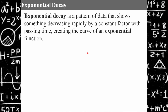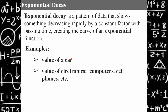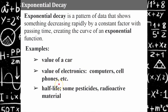Exponential decay is a pattern of data that shows something decreasing rapidly by a constant factor with passing time, creating the curve of an exponential function. Examples include the value of a car — when you drive a car off a lot it starts decreasing in value, and it's not at a constant rate, it's exponential. Values of electronics like computers and cell phones are a perfect example. There's also half-life — a science term about pesticides disintegrating and radioactive material — you'll hear about those in science courses.